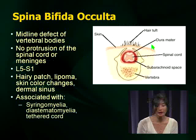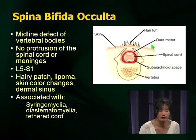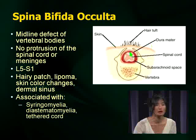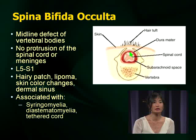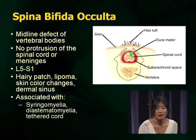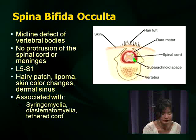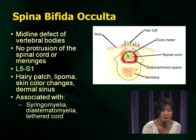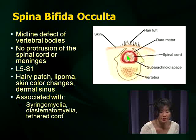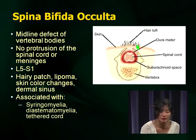Let's talk about different types of spina bifida. Spina bifida occulta is seen relatively frequently. On examinations, they're not going to show a picture and say 'what is it?' — they'll show you a hairy patch, indicate something about a lipoma, or skin color changes, or show a dermal sinus and ask what it's associated with. Spina bifida occulta — from the name — is a hidden defect in the fusion of the vertebral body. There is no protrusion of the spinal cord or meninges. You just see a little tuft of hair, or a lipoma or discoloration of the skin.